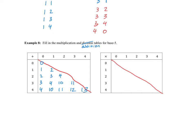Now let's try multiplication. Multiplying by 0 always gives 0. Multiplying by 1 — the identity — just gives the original number back. 2 times 2 is 4. 2 times 3 is 6, which we write as 1, 1. 2 times 4 is 8, written as 5 plus 3 more. 3 times 3 is 9, written as 5 plus 4 more. 3 times 4 is 12, which is 2 fives plus 2 more, so 2, 2. And 4 times 4 is 16, represented as 3 fives plus 1 more — so 3, 1.